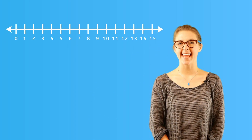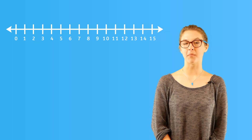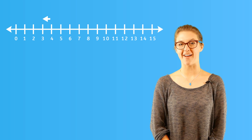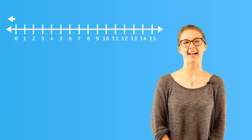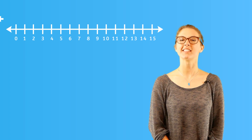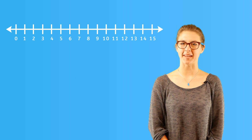A number line is simply a visual with numbers in order on a line. It can help you find an answer to a problem by moving left or right on the number line. Let's look at some examples to understand what I mean.